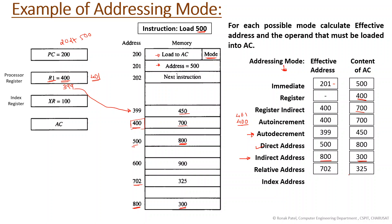In index addressing mode, the address field is added to the index register. The index register holds 100, and 100 plus 500 gives an effective address of 600. At address 600 the value is 900, so 900 is your operand loaded into the accumulator.